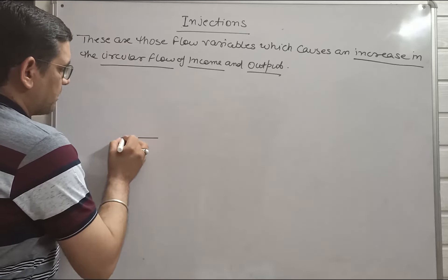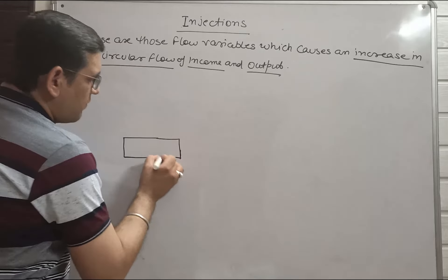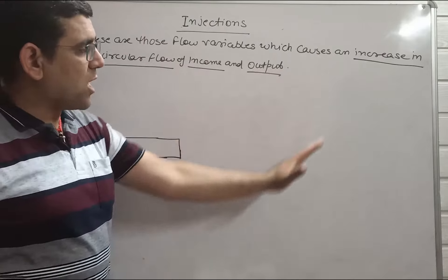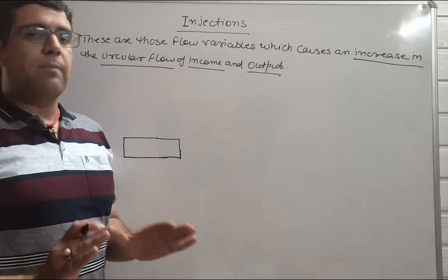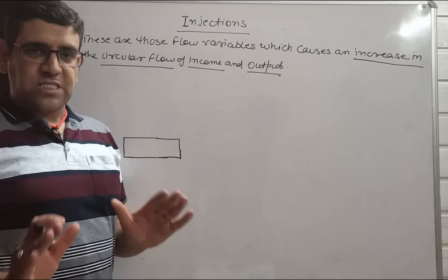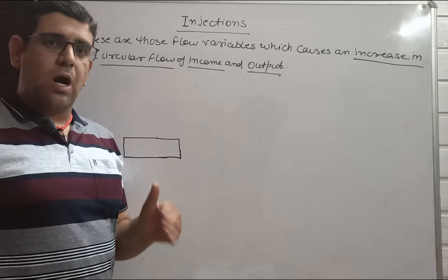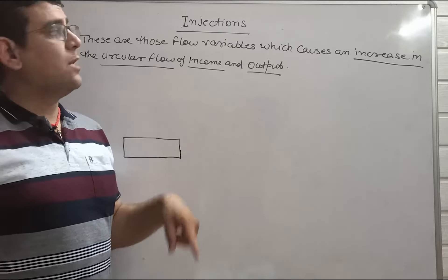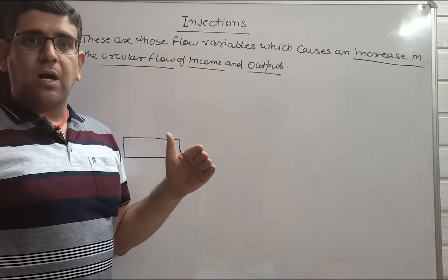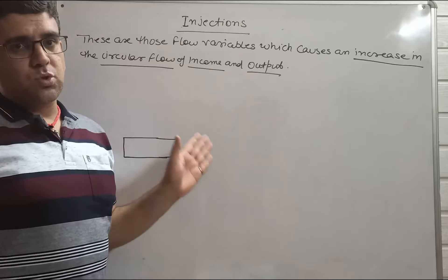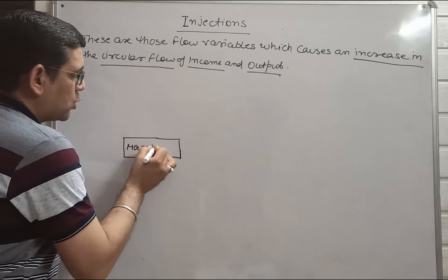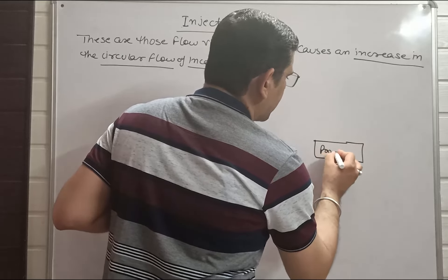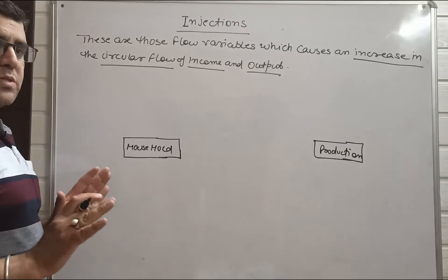For the sake of simplicity, we are not using a four-sector economy model, because to show injections in a four-sector model, we would need all four sectors. For simplicity, we are taking the example of a two-sector economy model which has only two sectors — a household sector and a production sector.